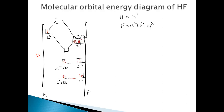The combination of the 1S orbital of hydrogen and the 2PZ orbital of fluorine results in the formation of sigma bonding (sigma SPZ) and sigma antibonding (sigma* SPZ) molecular orbitals. The remaining PX and PY orbitals are unable to overlap with the 1S orbital because their symmetry does not match — they are perpendicular to the internuclear axis — so they remain as non-bonding electrons. These are the non-bonding PX and PY orbitals.